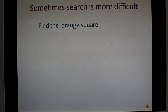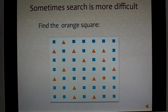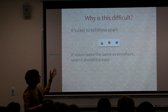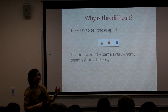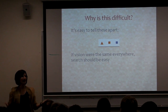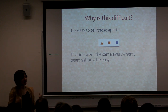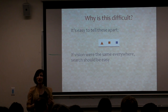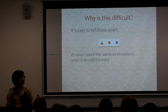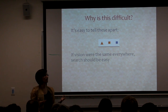That by itself wouldn't be weird, except sometimes search is more difficult. Here I'm going to put up another array and your job is to find the orange square and raise your hand when you see it. That takes a few seconds longer, doesn't it? The orange triangle, the orange square, and the blue square — when you're looking at them it's perfectly easy to tell them apart. They're very discriminable. So I'd like to argue this is evidence that if vision were the same everywhere this should be easy, but it's not. It implies that vision is in some way not the same everywhere.